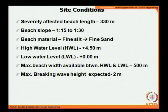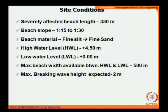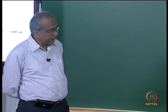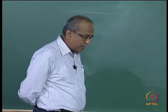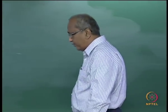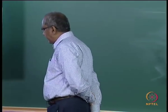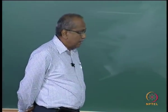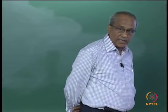The beach slope ranges between 1:15 to 1:30. Beach material consists of fine silt and fine sand. High water line is +4.5 meters, low water line is 0.0. Maximum beach width available between the high water line and low water line is 500 meters. The 500-meter width is very advantageous — at several locations the distance between high tide and low tide is only a few meters, making sea wall implementation very difficult. Maximum breaking wave height expected was around 2 meters.